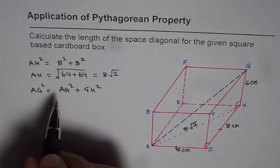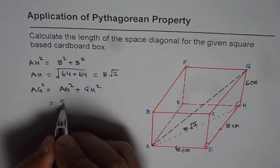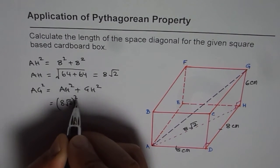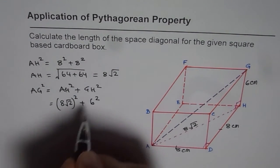Now AH square is square of 8 times square root 2. So (8√2)² plus GH is 6 square.